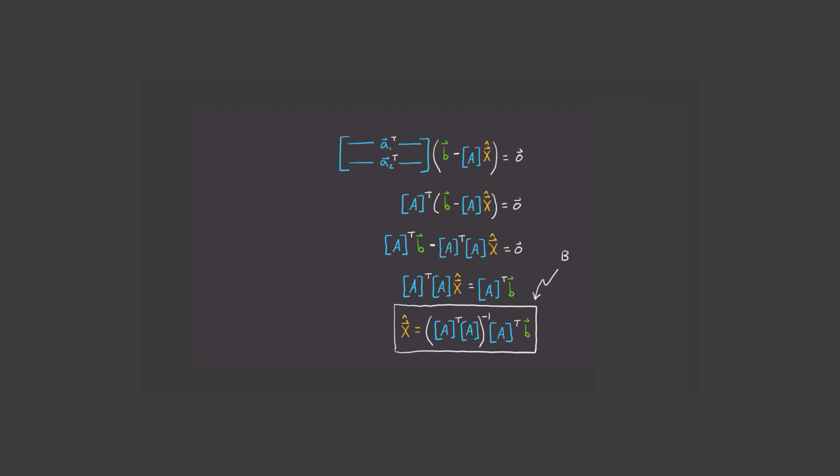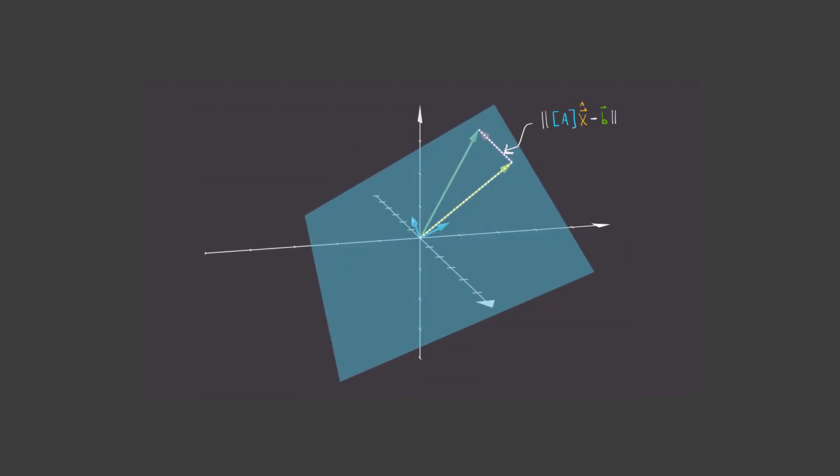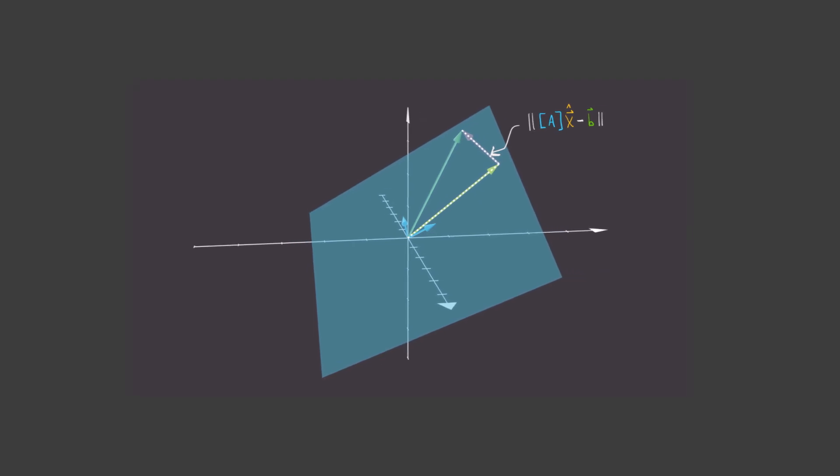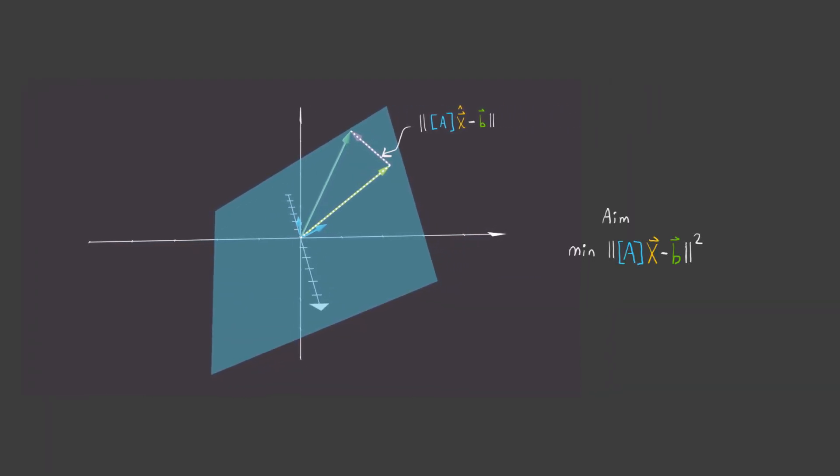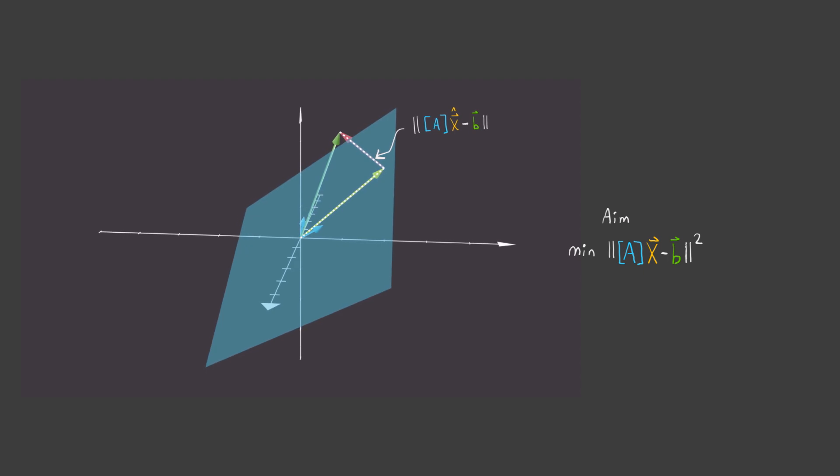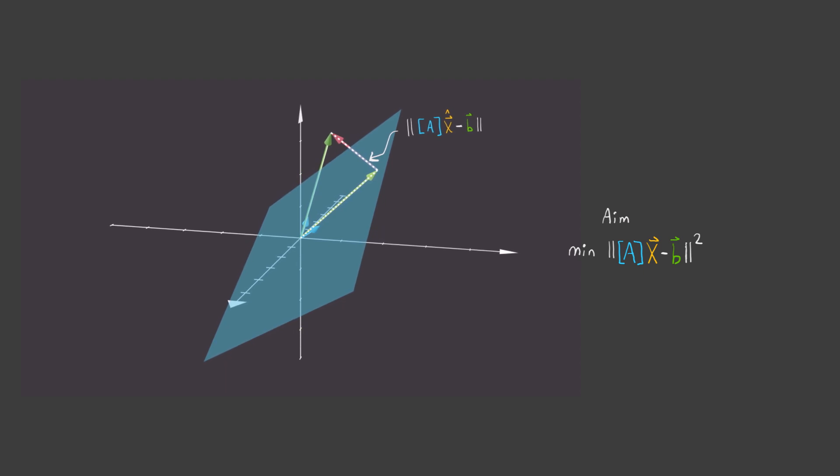What we've done is we've found the best possible value of our parameters, x hat, that minimizes this error term, which is the norm of Ax minus B squared. And just as confirmation, we can see that the length of this vector that I'm showing here is given by the norm of Ax hat minus B. And this is related to the error term we were trying to minimize all along. It's the length of this vector squared. And as you can see visually, this is the smallest length this vector can possibly have because of our wise choice of x.